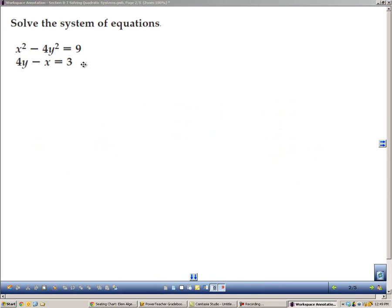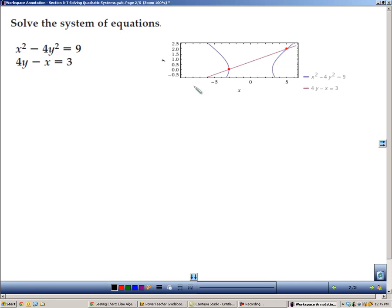Here we're asked to solve the system of equations, the bottom equation being a line and the top equation being a conic. I plugged it into a website and I found that these two equations represent a line and a hyperbola, and so those two are going to intersect in two places. So I know that I'm going to have two solutions here.